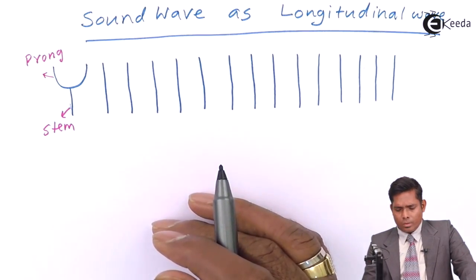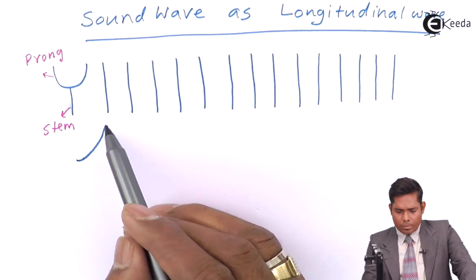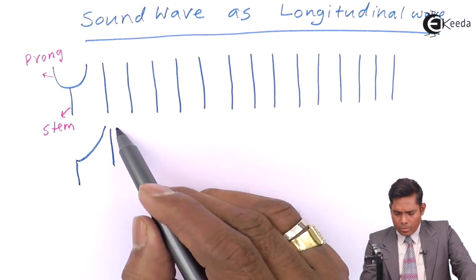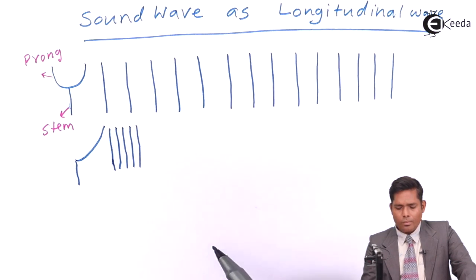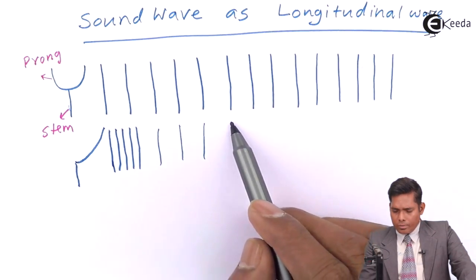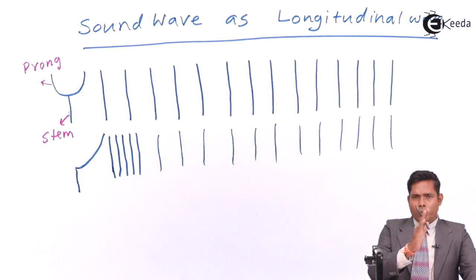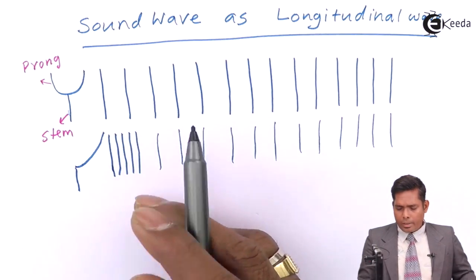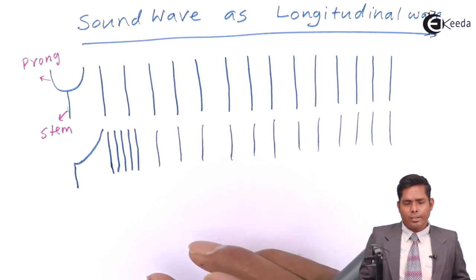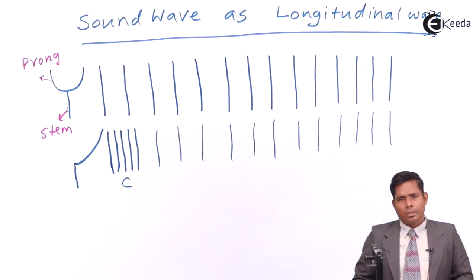When the prong moves outward, it will push the layers of air. So when it is outward, it pushes the air layers and they will come closer together. The layers will get closer, and the distance between them will decrease — they become more crowded and more dense. So the pressure will be more and density will be more. This region is called compression. Compression is when layers are closer to each other.